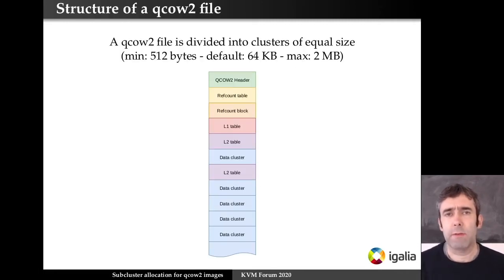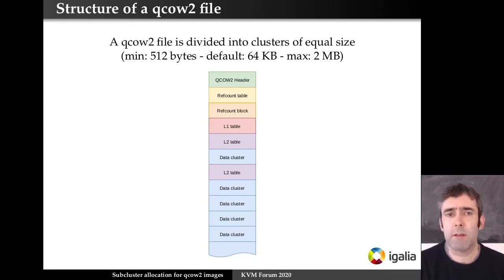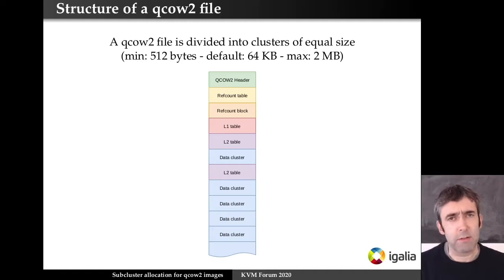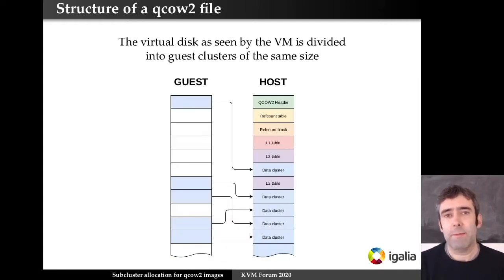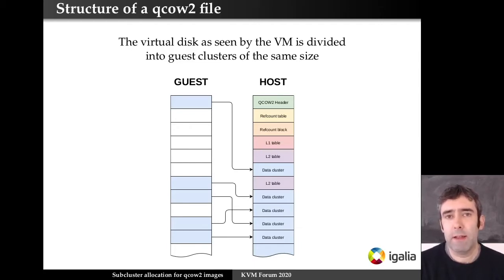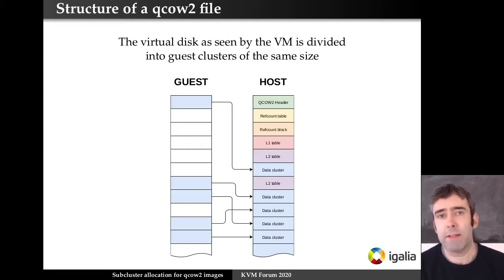So let's start with the format itself and how it works. The basic idea of the QCow2 file is that it is divided into clusters of the same size — 64k by default, but it can be changed when the file is created, from 512 bytes up to 2 megabytes. Let's focus on the data cluster, which contains the data that the guest can see. Every time the guest needs to read data it goes to the QCow2 file. If the cluster has been allocated it reads the data; if not, it contains zeros, or if there's a backing file it goes there to get the data.